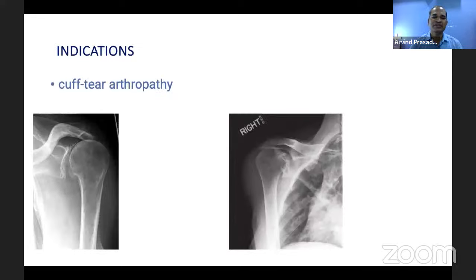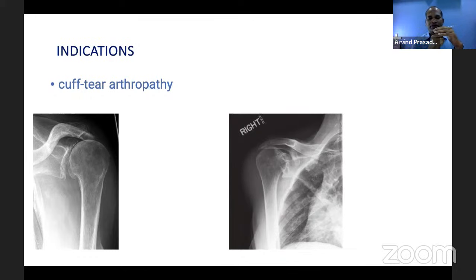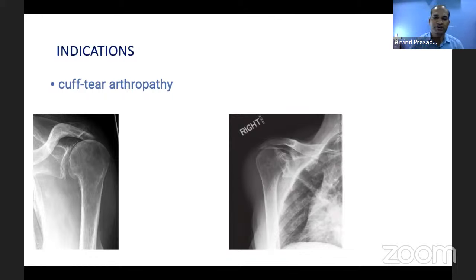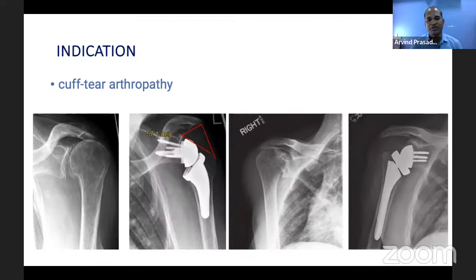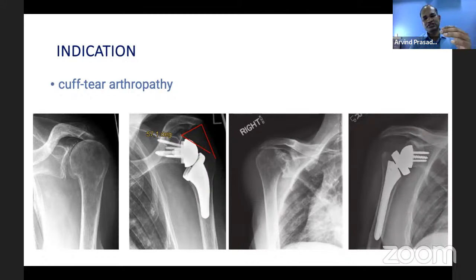The indications for reverse shoulder arthroplasty begin with rotator cuff arthropathy: with no cuff between the humeral head and the glenoid, the deltoid pull causes the humeral head to migrate superiorly, rubbing against the acromion and glenoid and causing arthritis — particularly with massive rotator cuff tear. Reverse shoulder arthroplasty addresses both the arthritic component and the abduction deficit, as the deltoid becomes the functional abductor of the shoulder joint after surgery.